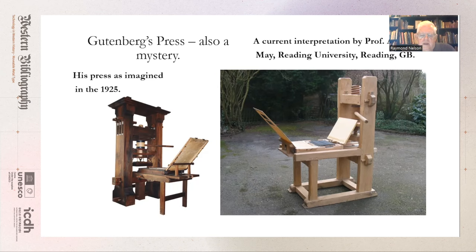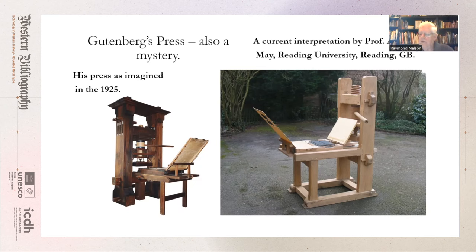Gutenberg and his workshop had to develop efficient methods for handling copy to be printed, for setting type and getting it worked off the press, and then had to find a way to market all the books. All of this was a complex operation. The lack of any of its elements might well have ended in failure, yet with sufficient effort and expense, Gutenberg's workshop did pull it all together with great success. But at the heart of his success lay movable type and that adjustable type mold. I hope this has been clear and useful. Thank you.